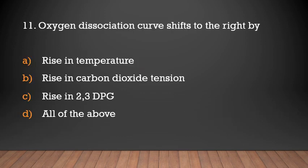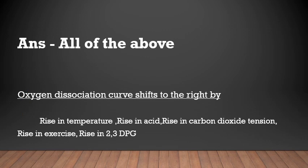Oxygen dissociation curve shifts to the right by: rise in temperature, rise in carbon dioxide tension, rise in 2,3-DPG, or all of the above? The answer is all of the above. The oxygen dissociation curve shifts to the right by rise in temperature, rise in acid, rise in carbon dioxide tension, rise in exercise, and rise in 2,3-DPG.